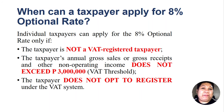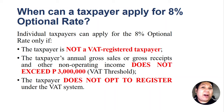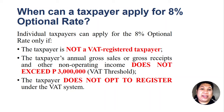The third scenario where a taxpayer can apply for 8% is when the taxpayer does not opt to register under the VAT system. If your annual gross sales or gross receipts do not exceed ₱3 million, by default you are not required to register under VAT. However, even if receipts do not exceed ₱3 million, you can optionally register under the VAT system. But when you opt to register under the VAT system, you are no longer qualified to apply for the 8% optional rate.